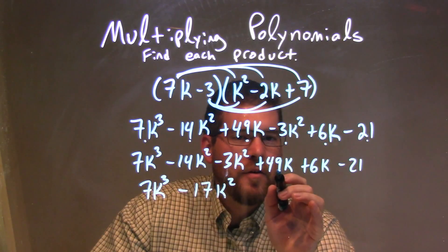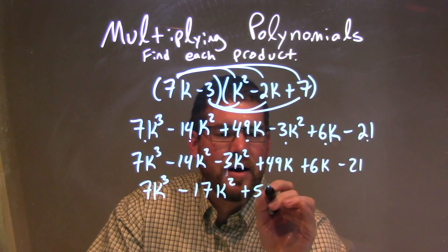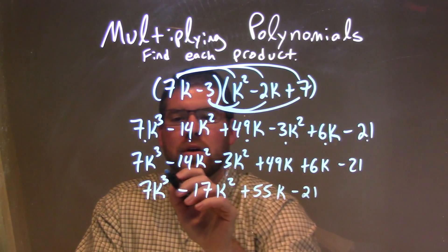Now we have our 49k and 6k, which come out to be 55k, so we have plus 55k, and then just minus 21 all by itself on the right.